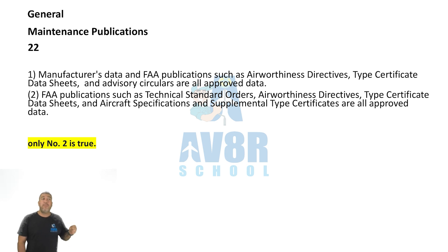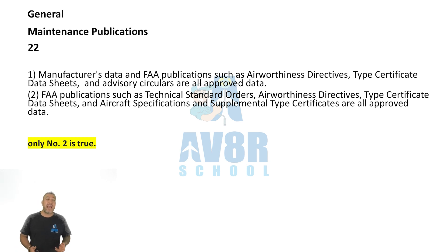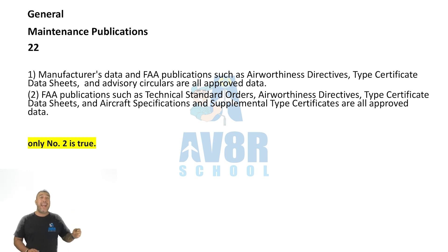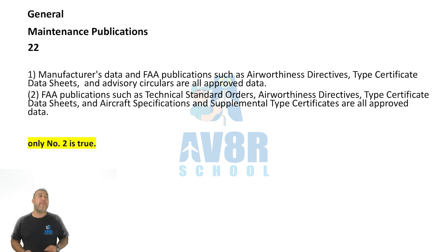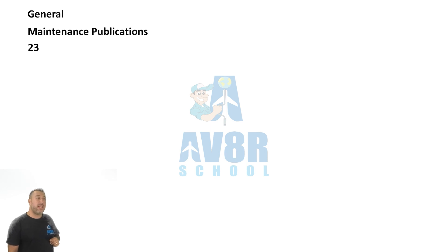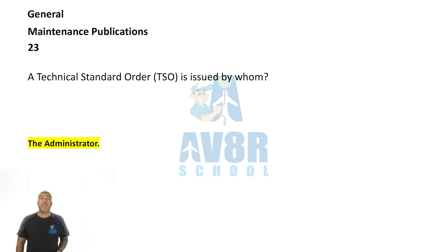Number 22 is true. What is considered approved data? FAA publications such as Technical Standard Orders (TSOs), airworthiness directives, type certificate data sheets, aircraft specifications, and supplemental type certificates are all approved data.